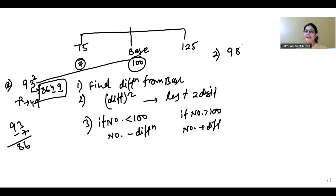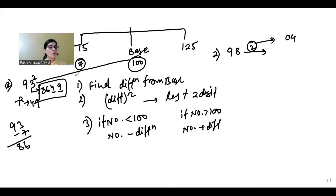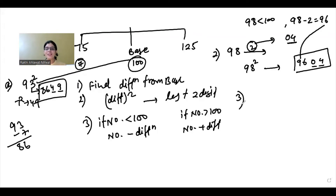Now find 98 squared. The difference from the base is 2. Two squared is 4, but the last two digits must be two digits, so since it is a single digit you put a 0 before it: 04. Now 98 is less than 100, so 98 minus 2 equals 96. Your answer is 9604.